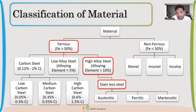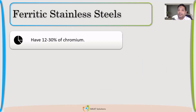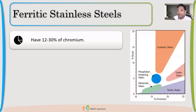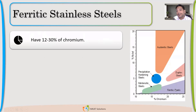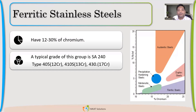Let us talk about ferritic stainless steel. If you remember the earlier diagram where we have higher chromium percentage, ferritic stainless steels have a very high percentage of chromium — 12 to 30%. The second most important thing is that they don't have nickel. When nickel is not added, the nature becomes ferritic. Typical grades are 405 and 410.